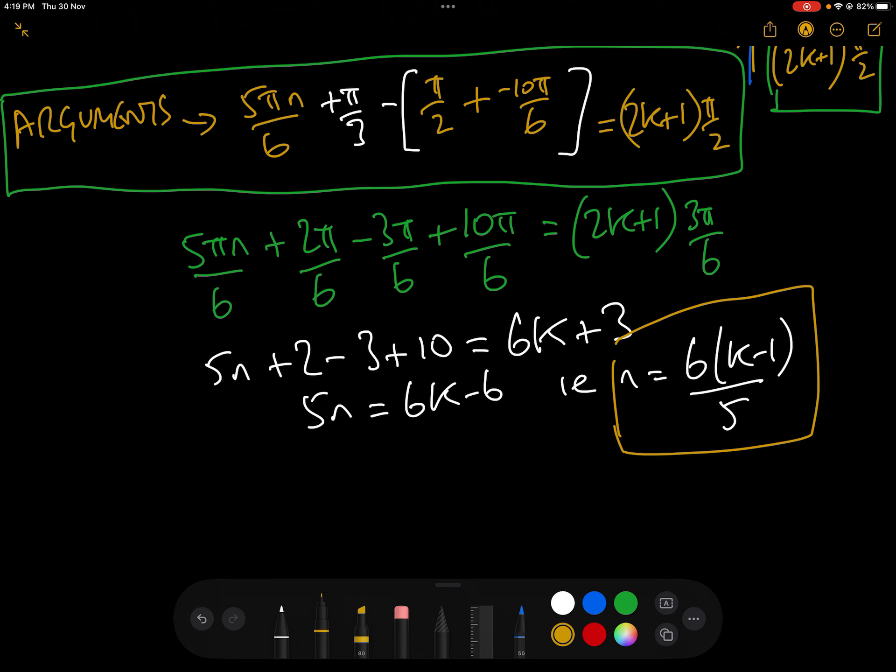All we need to do now is plug in various values of k until we get this expression to be an integer. If we put k equals 1, then n is 0, and we know n is a positive integer, so we can't use k equals 1. k equals 2 would give 6 over 5, which is not an integer. In actual fact, the first k that we need is k equals 6. When k equals 6, it's 6 times 5 over 5, so n would equal 6.